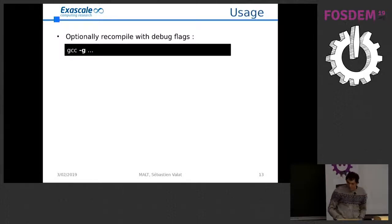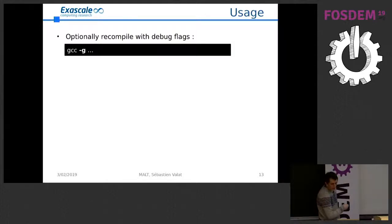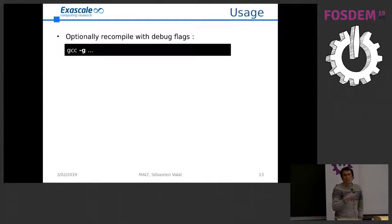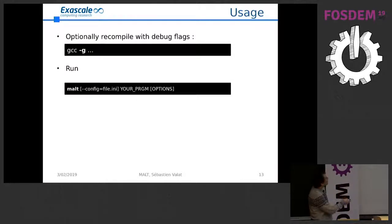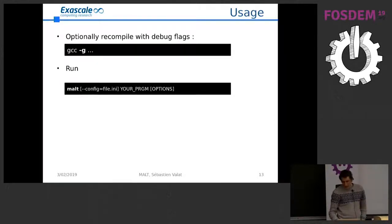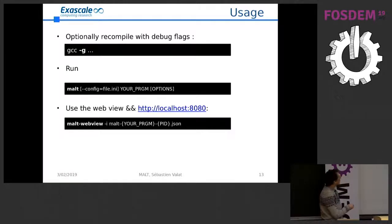For usage, it's quite easy. You just need to recompile your application with the debug flag enabled — without it, I can't provide source annotations showing which line made which allocations. You still get the rest of the tool, but you lose that. So just recompile with -g or the equivalent for your compiler. Then, just like Valgrind, you run: malt, your program, and its options. You can also provide a config file to tune the profiler. This produces a JSON file as output, and then you start the graphical interface — a small web server implemented in Node.js.